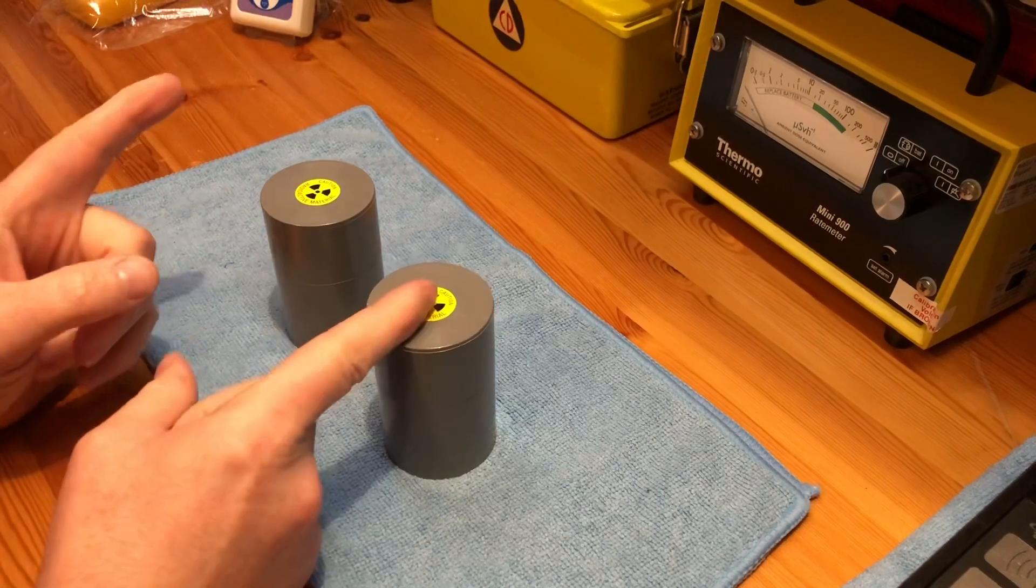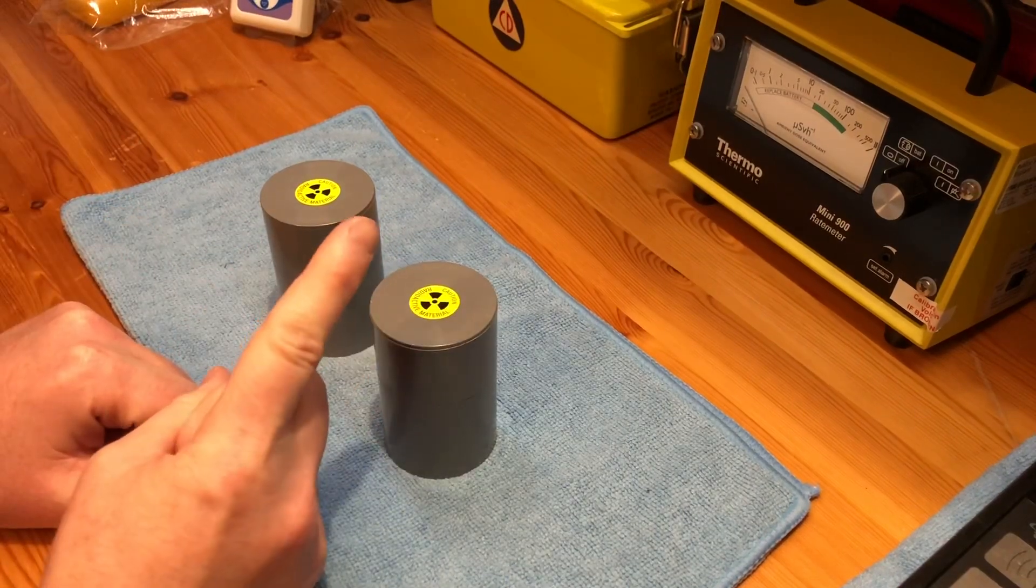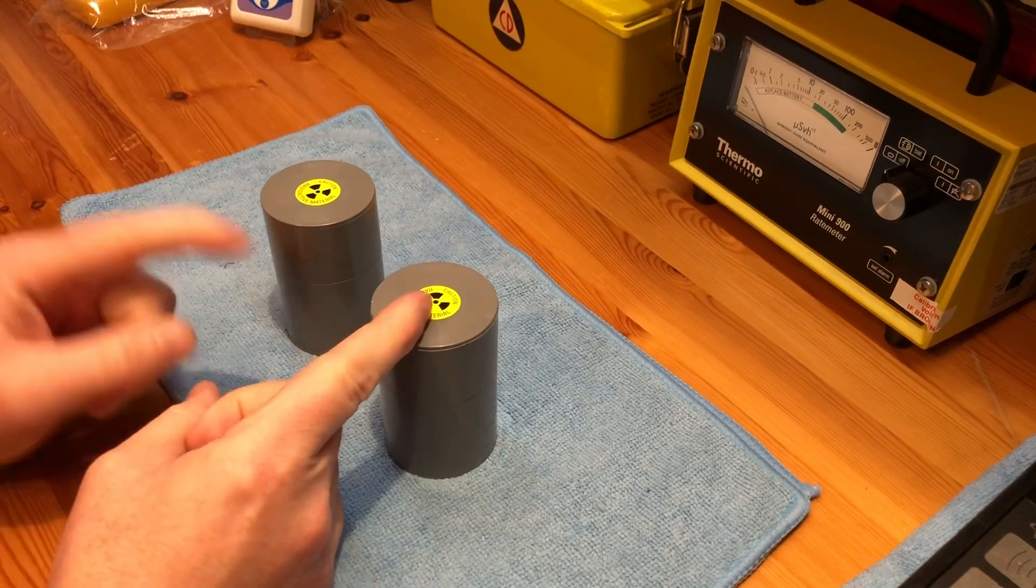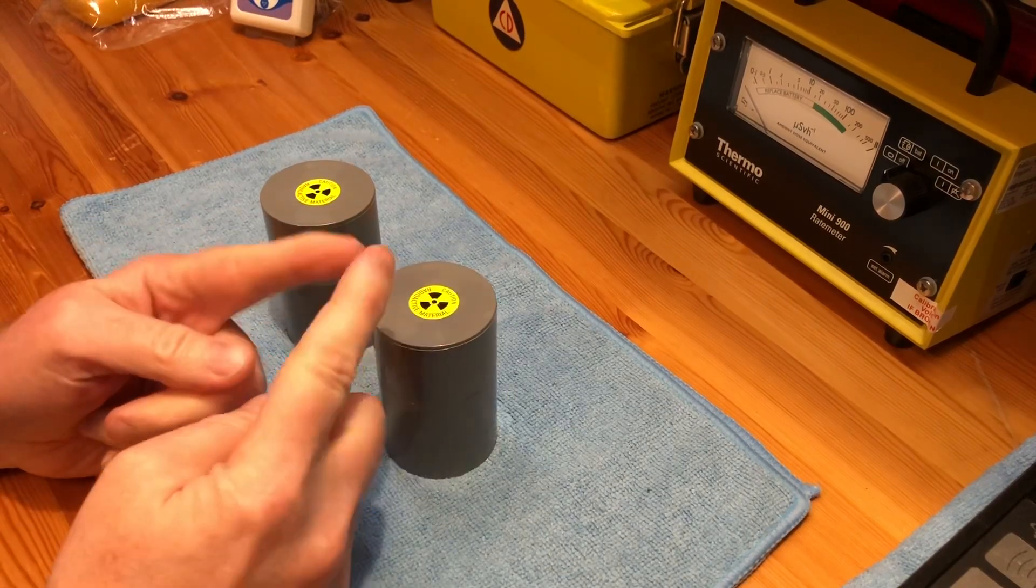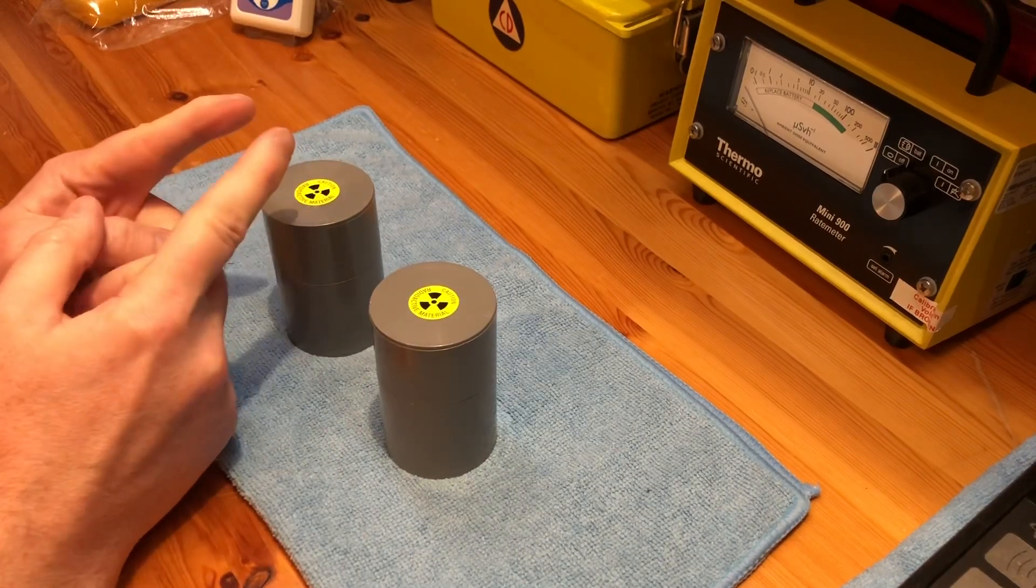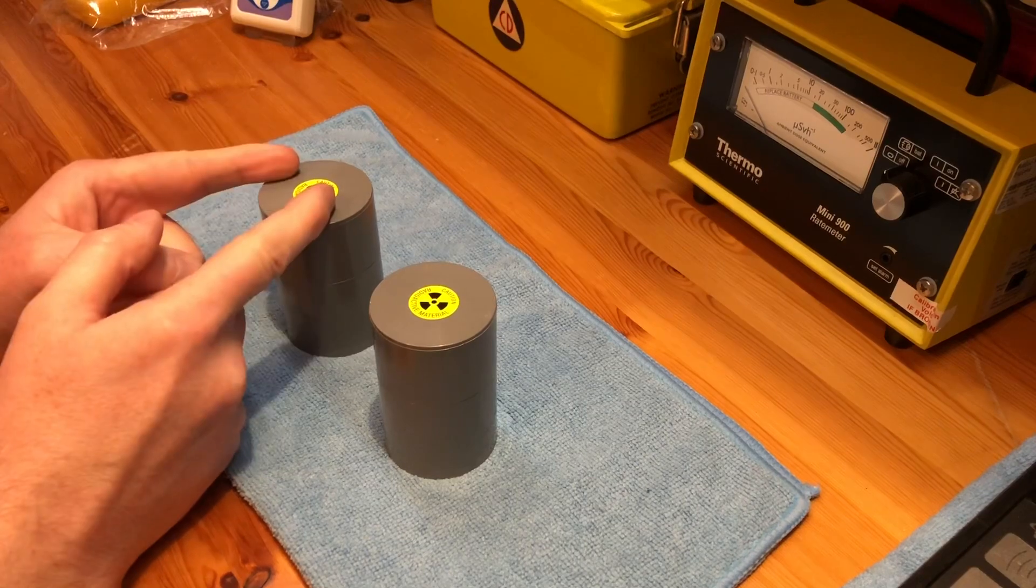So what I've got in them: in this one I've got strontium-90, two sources of strontium-90 from my DP5V and also from my DP63. In this one I have the radium dial from the DP63.